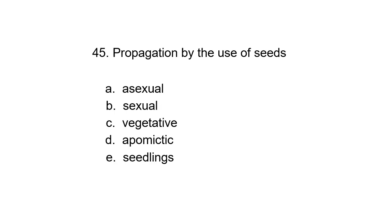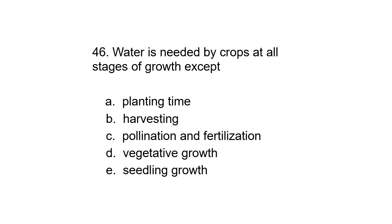Question 45. Propagation by the use of seeds: A. Asexual, B. Sexual, C. Vegetative, D. Apomictic, or E. Seedlings. Correct answer is sexual.